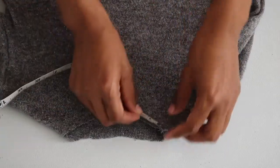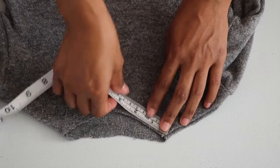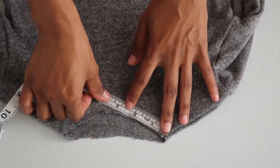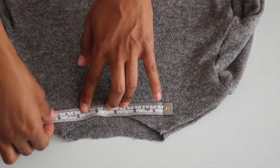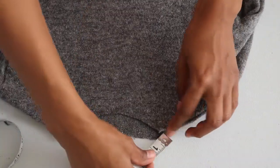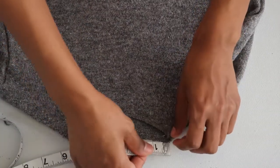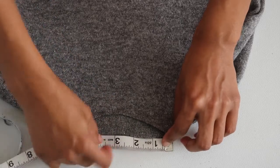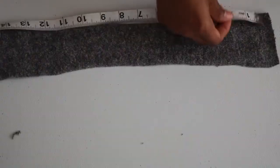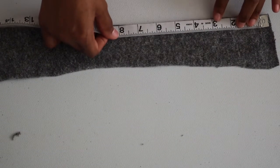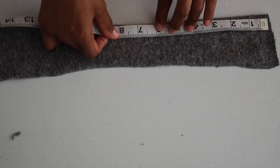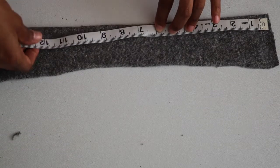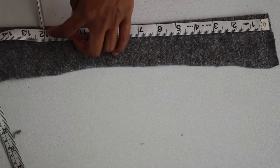So to make the band for the collar, I measured the curved neckline in the front of the sweater. Then I measured the neckline in the back of the sweater and added both of those measurements together. On another piece of scrap material that's on a fold, I went ahead and took that measurement and added about a half inch seam allowance.